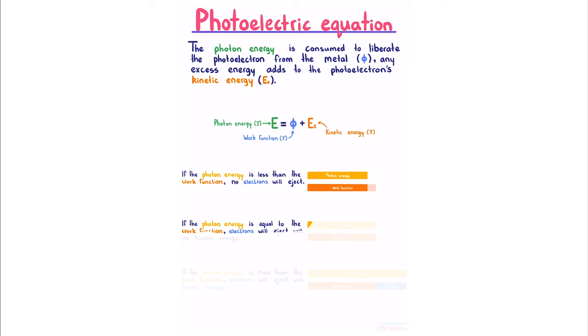If the photon energy is equal to the work function, electrons will eject with no kinetic energy.